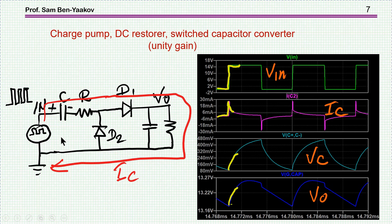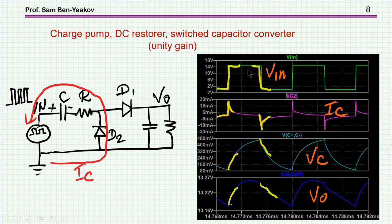Here is the principle of operation. We have pulses coming in, and when the pulse is high, we have charging of the output. We see Vin, the voltage going up, the current through the capacitor, and the voltage across the capacitor being charged, and then the output voltage charging. As the pulse goes down, we have a discharge of this capacitor through this diode. We see the current of the discharge, the flying capacitor voltage going down, and the output voltage — now fed from the holding capacitor — also going down. This is the typical operation of a charge pump, or DC restorer, or switched capacitor converter.